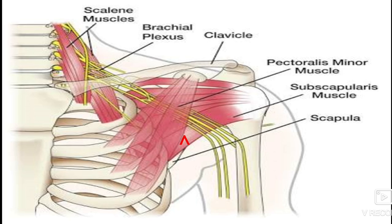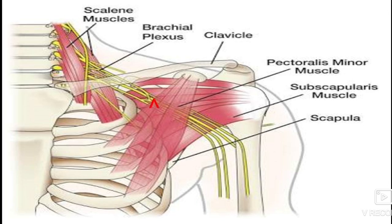So the brachial plexus is the group of nerves arising from the spinal cord — specifically the ventral rami of the spinal nerves. These ventral rami come together to form nerves, and a group of such nerves is termed a plexus. The yellow-colored portion shown here represents the nerve that supplies the brachium region, forming the brachial plexus.